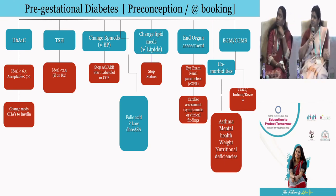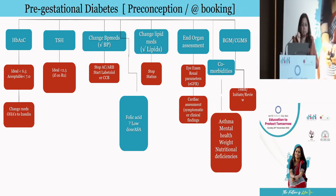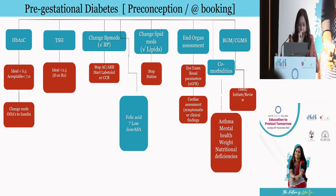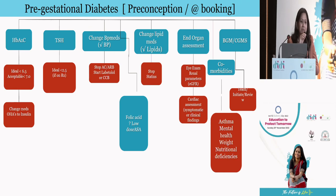To summarize, good pre-gestational diabetes management leads to a good pregnancy outcome. We need to spend time with the lady — explaining the importance, counseling and educating her about switching to insulin, making her aware of the targets, assessing complications and comorbidities. Until the time she conceives, a good contraceptive advice should also be given. Thank you.